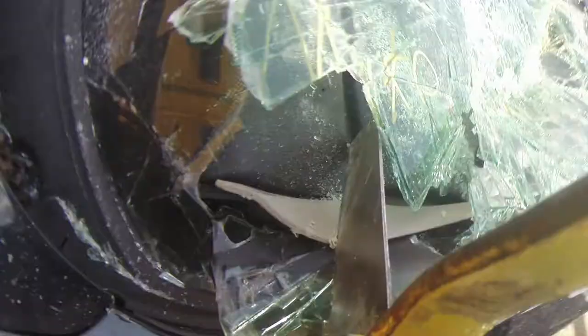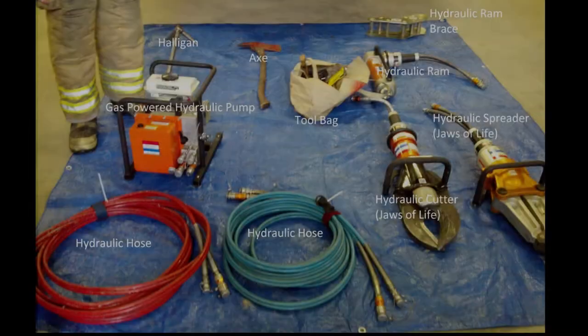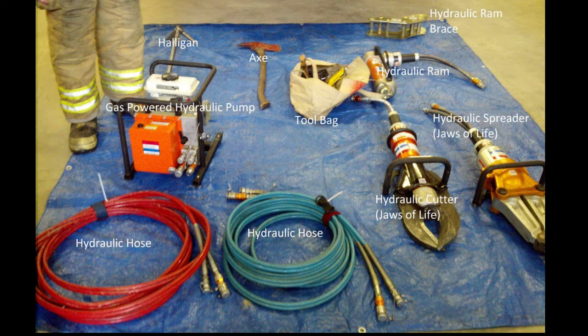Another item that must be addressed as extrication operations begin is the removal of all remaining glass in the vehicle. Personnel do this so that the glass does not become a hazard later. Generally coordinated with this is the beginning of the process to systematically remove or displace parts of the vehicle. Doors will typically be removed first, utilizing hydraulic spreaders, commonly referred to as the jaws of life, along with hydraulic cutters, reciprocating saws, as well as a vast array of other tools.